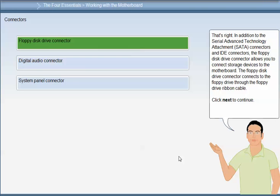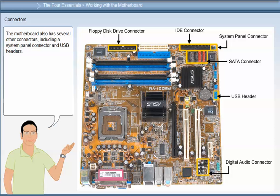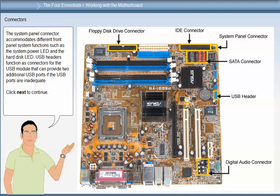The floppy disk drive connector connects to the floppy drive through the floppy drive ribbon cable. The motherboard also has several other connectors including a system panel connector and USB headers. The system panel connector accommodates different front panel system functions such as the system power LED and the hard disk LED. USB headers function as connectors for a USB module that can provide two additional USB ports if the USB ports are inadequate.